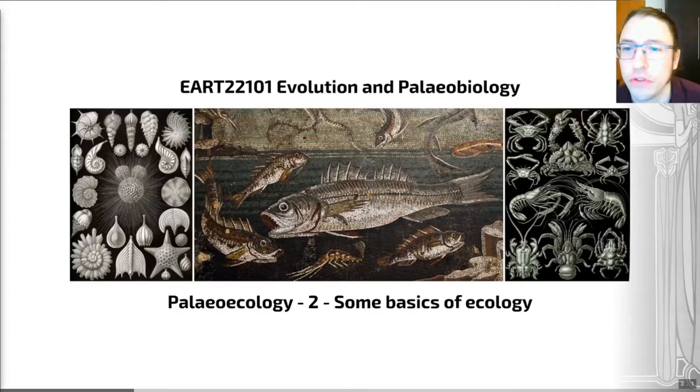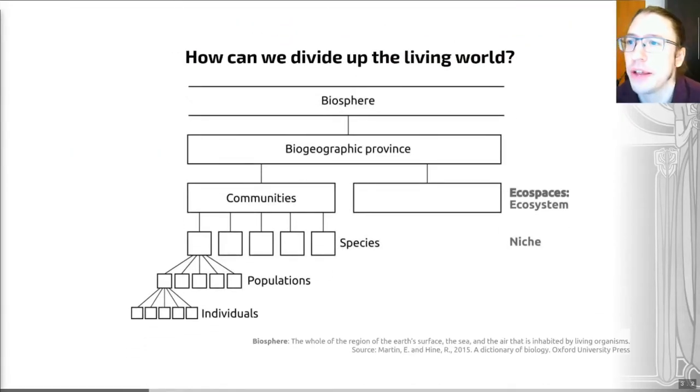The first question we may want to think about if we're defining and thinking about ecology is how we can divide up the living world. Now the broadest category of the living world is a thing called the biosphere. That's the broadest ecological category that we can possibly make and this is defined as the whole of the region of the earth's surface, the sea and the air that is inhabited by living organisms.